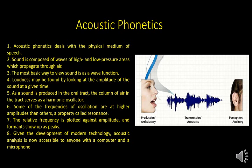Acoustic phonetics deals with the physical medium of speech — how speech manipulates sound waves. Sound is composed of waves of high and low pressure areas which propagate through air. The most basic way to view sound is as a wave function, which plots the pressure measured by a sound recording device against time. Loudness may be found by looking at the amplitude of the sound at a given time. As sound is produced in the oral tract, the column of air serves as a harmonic oscillator, oscillating at numerous frequencies simultaneously. Some frequencies oscillate at higher amplitudes than others, a property called resonance. The resonant frequencies of the vocal tract are known in phonetics as formants.